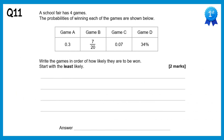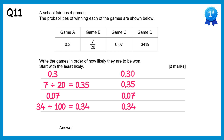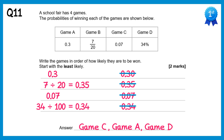For this question we put probabilities in order from least likely to most likely by converting them all to decimals. Game A: 0.3, Game B: 7/20 = 0.35, Game C: 0.07, Game D: 34% = 0.34. In order from smallest: 0.07 (C), 0.30 (A), 0.34 (D), 0.35 (B).